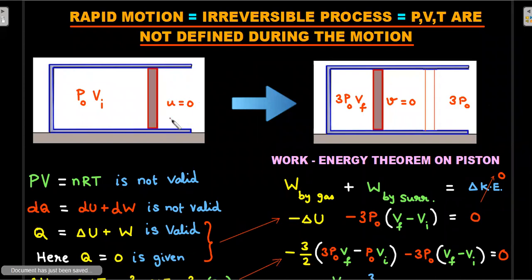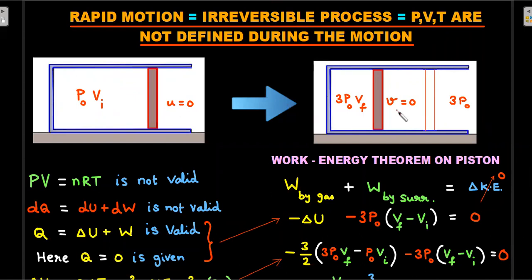Since the external pressure increased suddenly, there is a force imbalance on the piston. Even though it has finite mass, acceleration occurs - so there is no mechanical equilibrium. The piston moves rapidly inward, compressing the gas. Because it is rapid and not slow, this is an irreversible process. During the motion, state variables p, V, and T are not defined. The piston starts and ends at rest; since no friction exists, if outside pressure is 3p₀, inside pressure must also become 3p₀ at equilibrium.